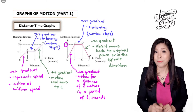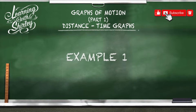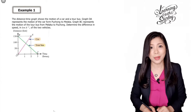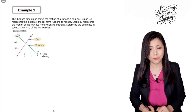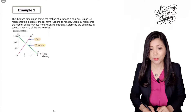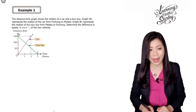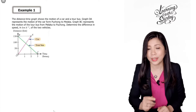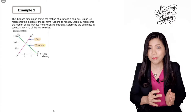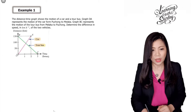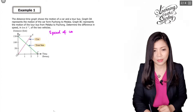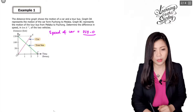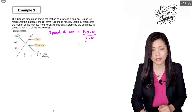Let's look at example number one. The distance-time graph shows the motion of a car and a tour bus. Graph OA represents the motion of the car from Pochong to Malacca; graph BC represents the motion of the tour bus from Malacca to Pochong. To find the difference in speed, I'll find the speed of the car first. The speed of the car, represented by line OA, is 150 minus 0 over 2 minus 0, which gives 75 kilometers per hour.